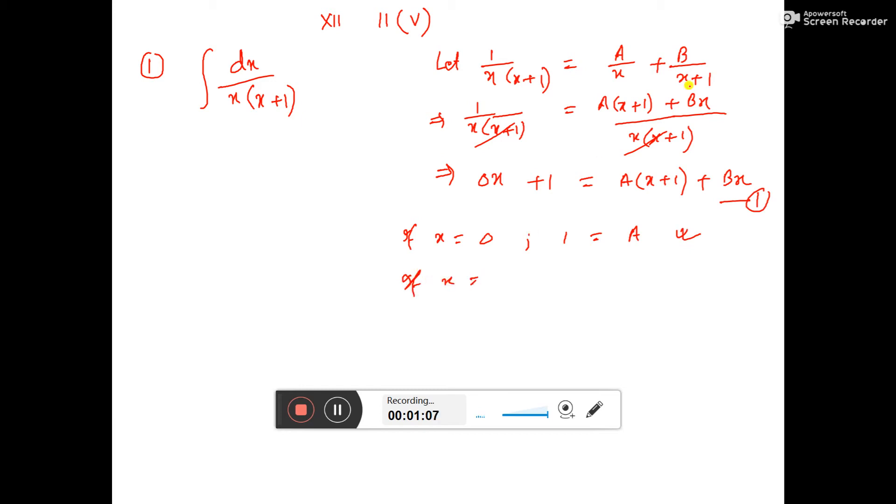Now if x equals minus 1, putting this in equation number 1, the left side is 1. The a into x plus 1 portion becomes 0, and b into minus 1 gives minus b. That means b equals minus 1.